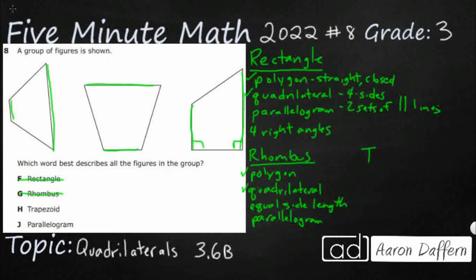All right, let's check a trapezoid. Trapezoids are polygons. We know that's good. They are quadrilaterals. Okay, so with four sides, we know that's good.